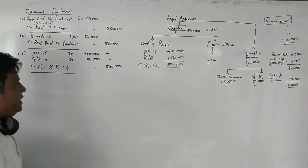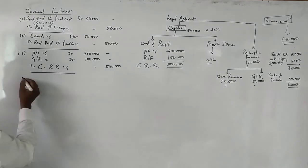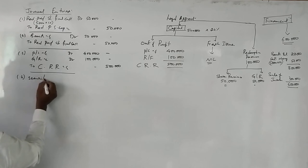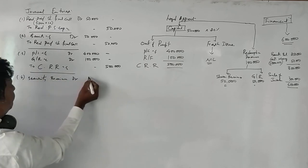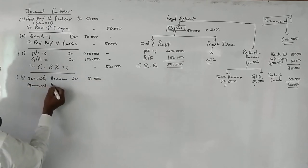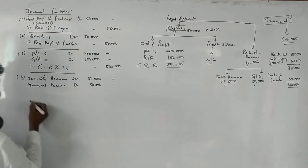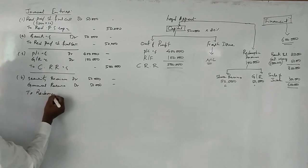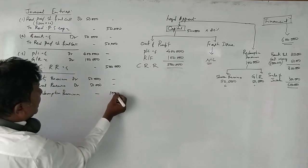Once we show the capital portion, we also show the redemption premium portion. For that we pass: Security Premium Account Debit 50,000, General Reserve Account Debit 50,000 — To Redemption Premium Account 1 lakh.